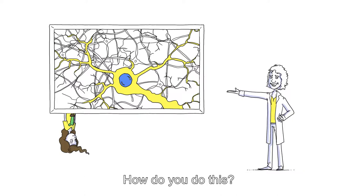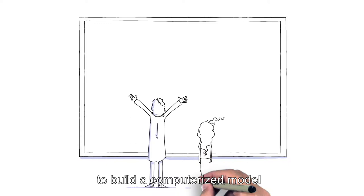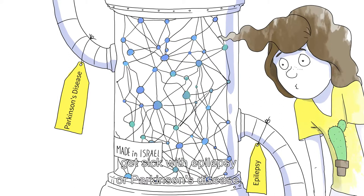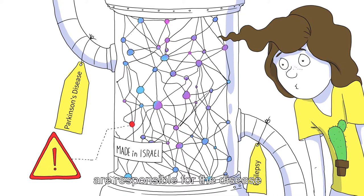How do you do this? Our approach is to use physical principles to build a computerized model made entirely of mathematical equations, simulating the electrical and chemical activity that takes place in the real biological brain. Then, we try to make the model we built get sick with epilepsy or Parkinson's disease. Once we succeed, we'll understand which components are responsible for the disease.